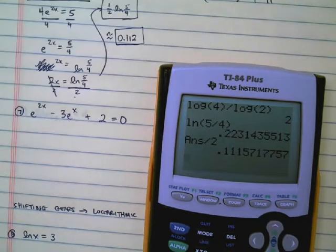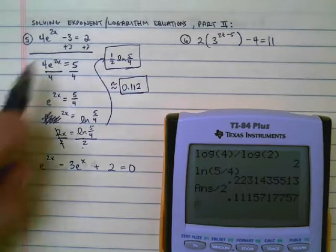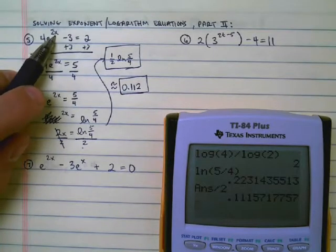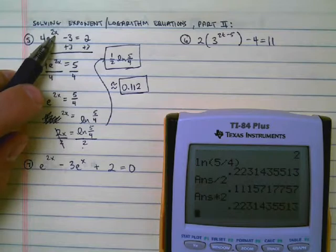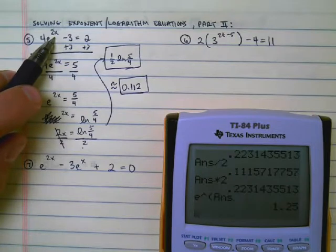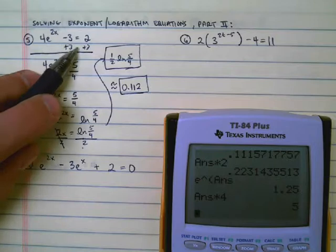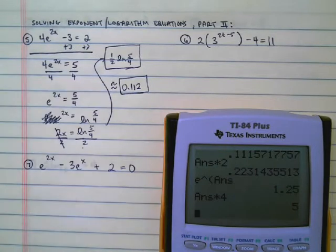I can always go back and check this answer by plugging it in for x and seeing if it works out. If I multiply this by 2, if I take e to that power, I have 1.25. If I multiply it by 4, now I've got 5. And 5 minus 3 equals 2. So it does check out.